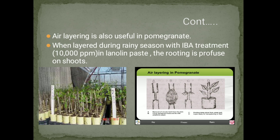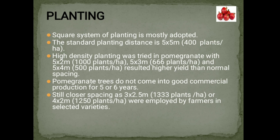Planting. The square system of planting is mostly adopted. The standard planting distance is 5 × 5 meters, i.e., 400 plants per hectare. High-density planting has been tried with spacings of 5 × 2 meters (1000 plants/ha), 5 × 3 meters (666 plants/ha), and 5 × 4 meters (500 plants/ha), all resulting in higher yield than normal spacing. Pomegranate trees do not come into good commercial production for 5–6 years. Still closer spacings of 3 × 2.5 meters (1333 plants/ha) or 4 × 2 meters (1250 plants/ha) have been employed by farmers for selected varieties.